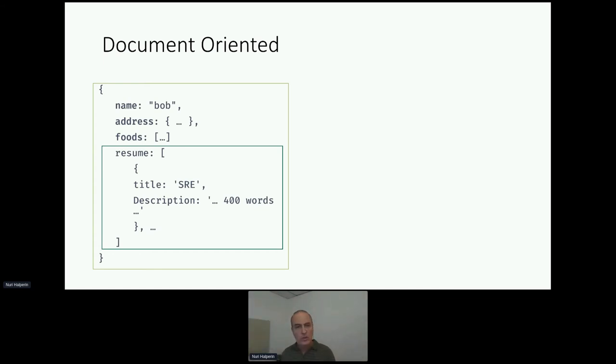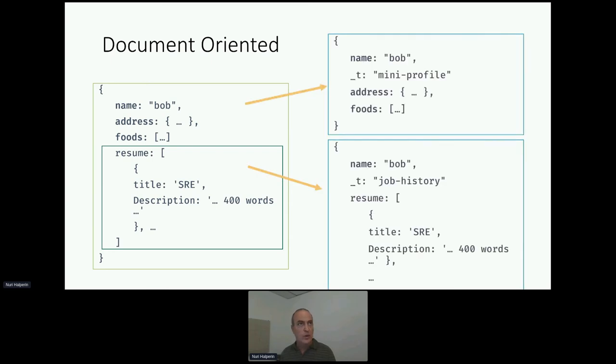So in this case, what we could do is trim down the document for a use case of just listing candidates and not having the full gory detail of the description of their jobs into two parts. The top part here represents Bob, the candidate, without too much extra data, kind of a caricature or, you know, summary.